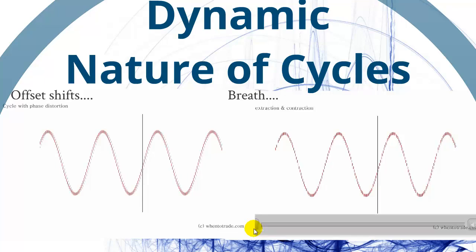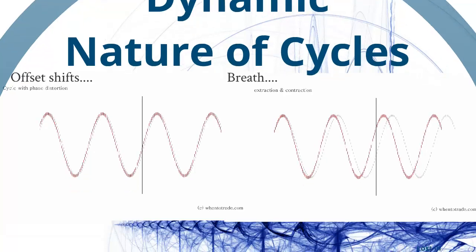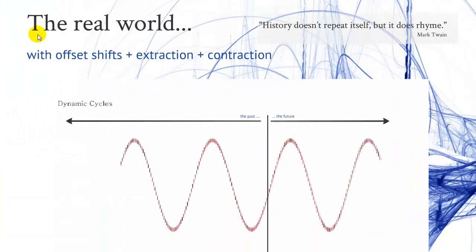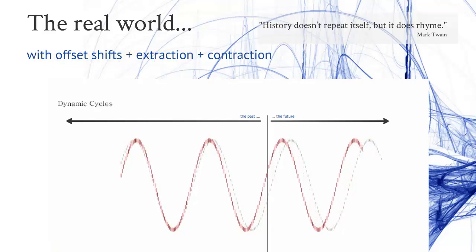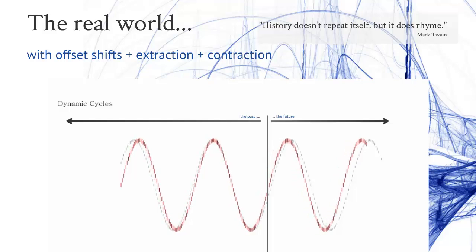What we do next is we will put both effects on the chart. In the real world, you will see both effects: offset shifts, extraction, and contraction during the same time.